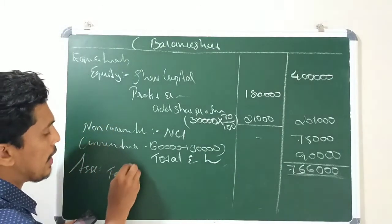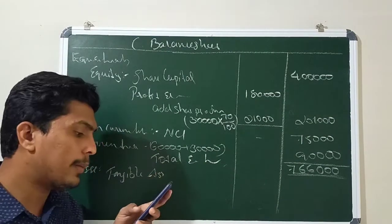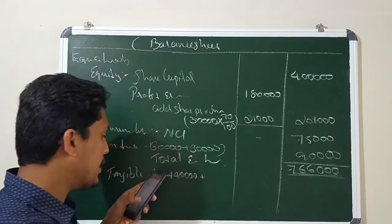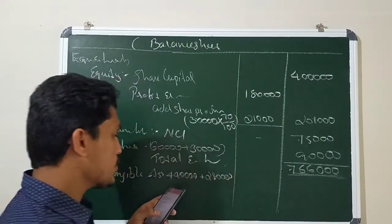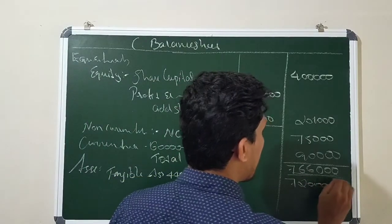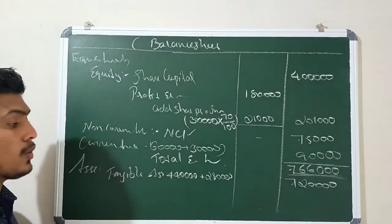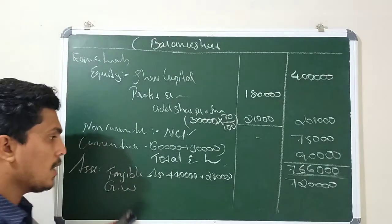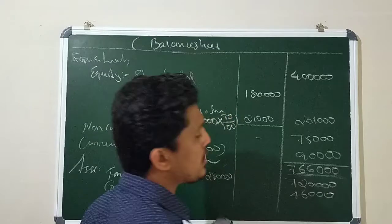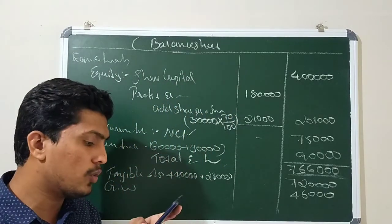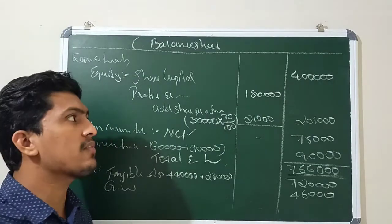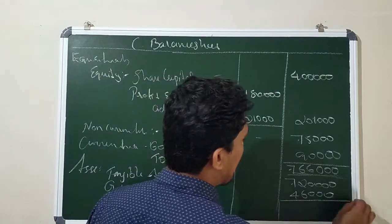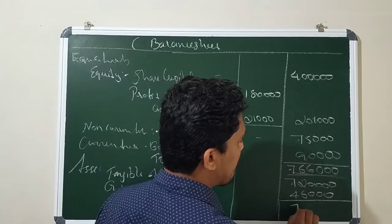On the asset side, tangible assets from both companies are added together: parent company 4,04,000 plus subsidiary company 2,08,000 equals 6,12,000. We eliminate the investment in S Limited from the parent's balance sheet. Goodwill of 46,000 is added as a non-current asset. So total assets: 7,20,000 plus 46,000 equals 7,66,000, which balances with total equity and liabilities.